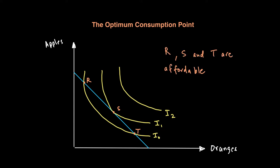R and T are on the same indifference curve I1. I1 is to the right of I0, so it has a higher utility. From a consumer preference perspective, he'll prefer I2 over I1 and I1 over I0. While I2 is completely unaffordable with the current budget line, if we look at I1 and I0, point S will give us higher utility than points R and T because it is not only affordable but is also on a higher indifference curve.